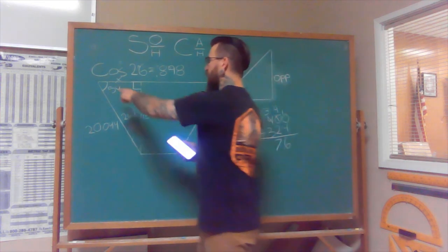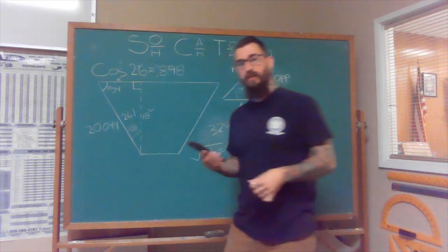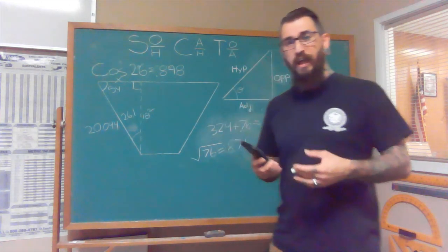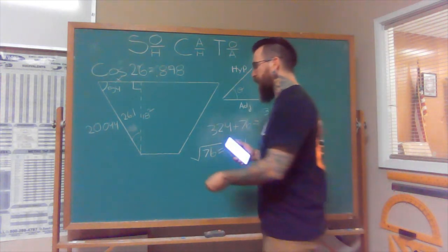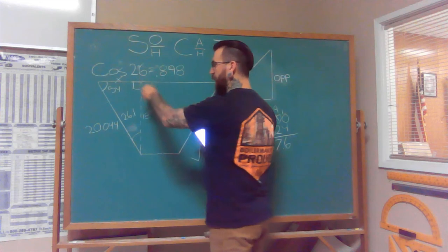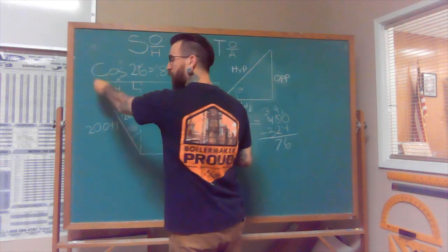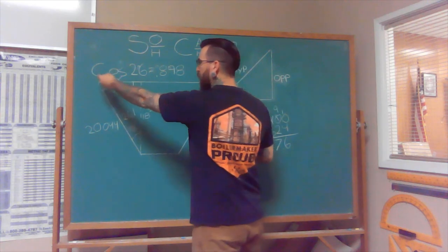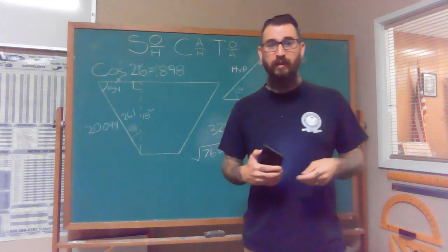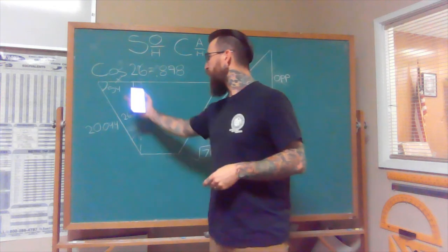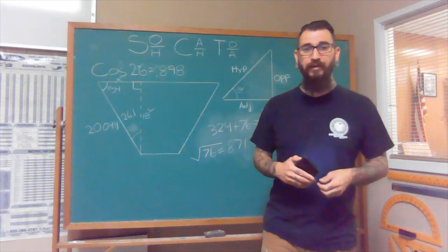So this leg right here equals 8.71, fairly close to eight and three quarter. So if we laid out our 18 inch line right here and then we laid out our eight and three quarter inch roughly line up here, we connected the two dots. That would give us a 26 degree angle off the base or a 54 degree angle off the top.